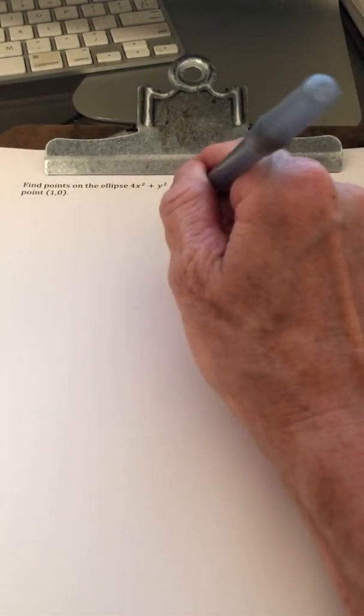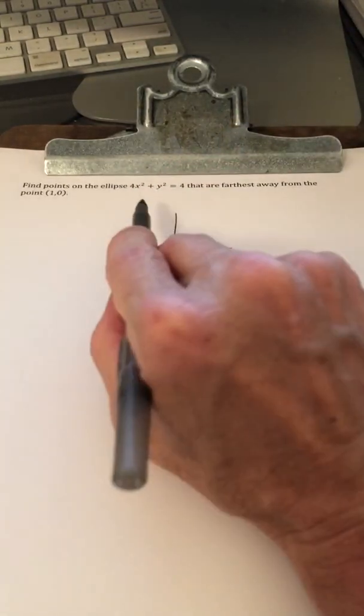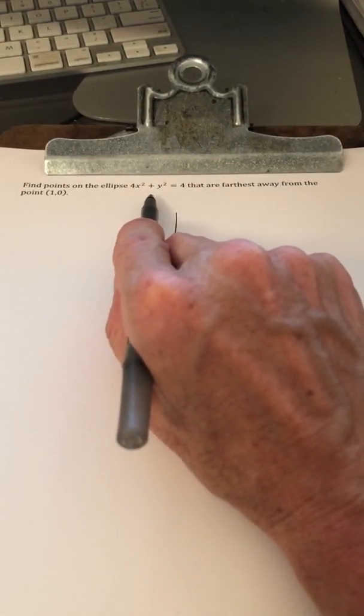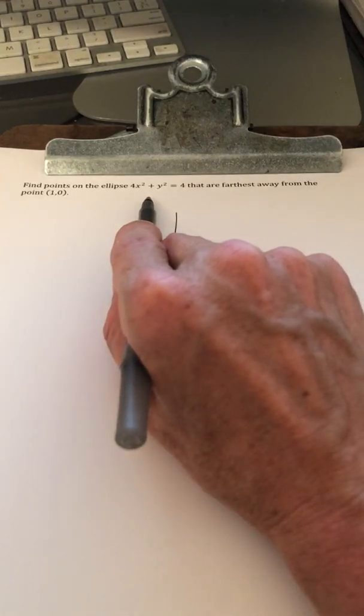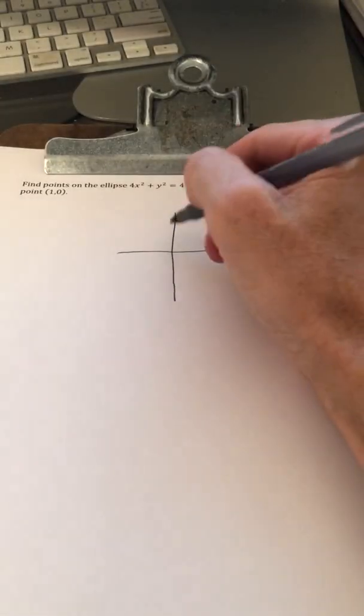So what you want to do first is do your best to come up with a graph of this ellipse, and what you want to do is just use the x and y intercepts. The x intercepts are plus or minus 1, the y intercepts are plus or minus 2.